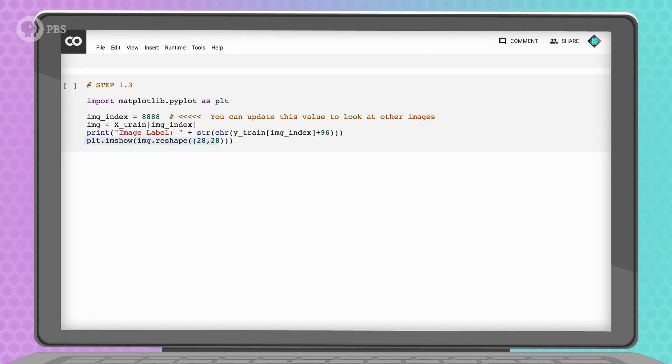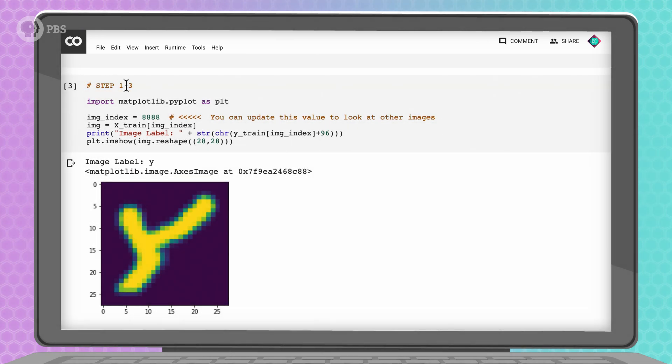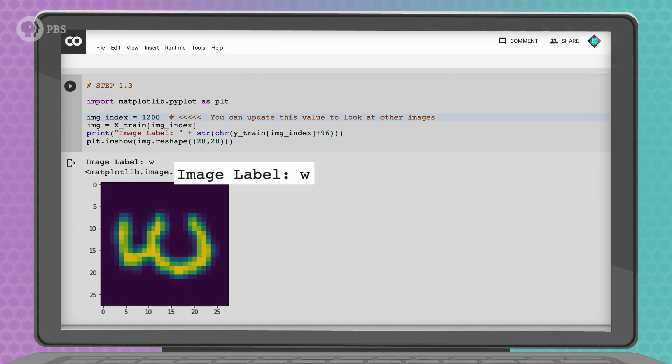Okay, let's write a little piece of code to make sure that we imported our dataset correctly. This line lets us display an image and will also display the label using the print command. See, this letter is labeled as a Y. We can display a different example by changing this index number, which tells our program which letter image in the EMNIST dataset to pull. Let's look at the image indexed at 1200. This is labeled as a W.